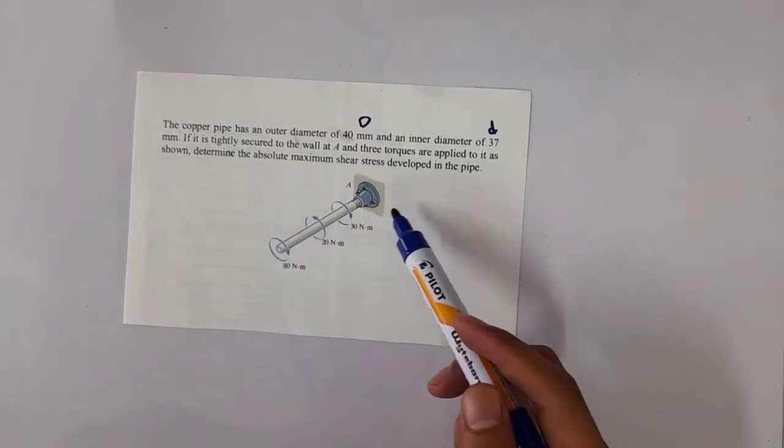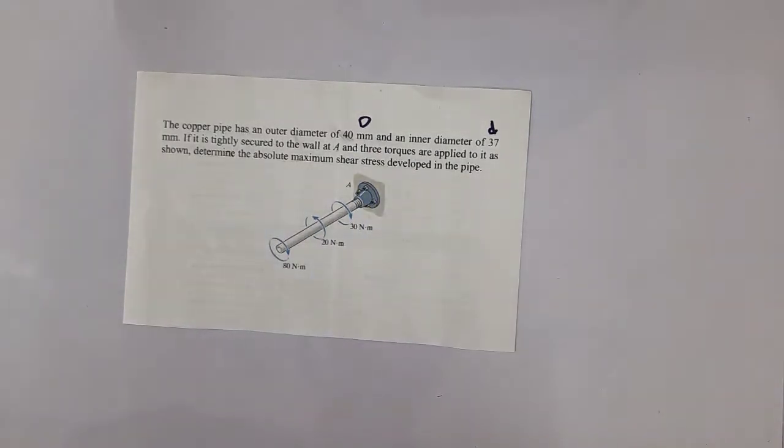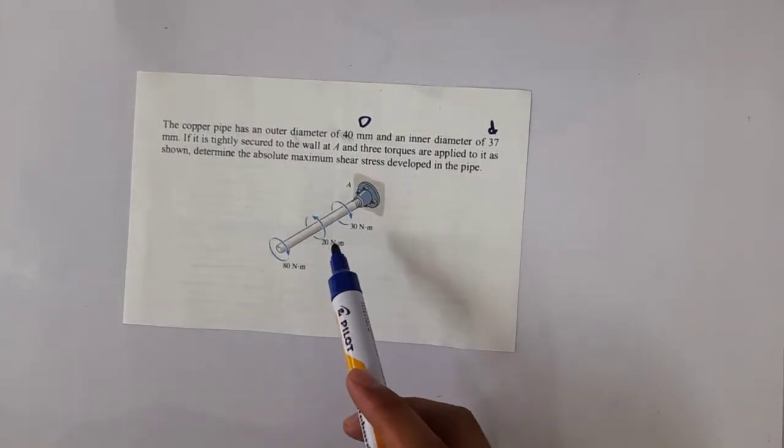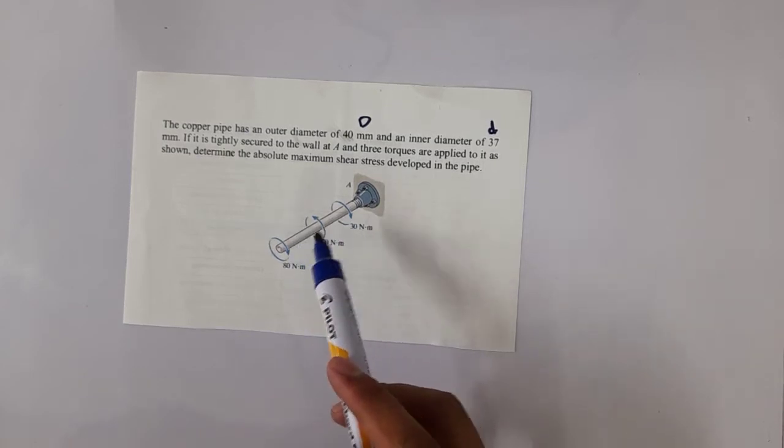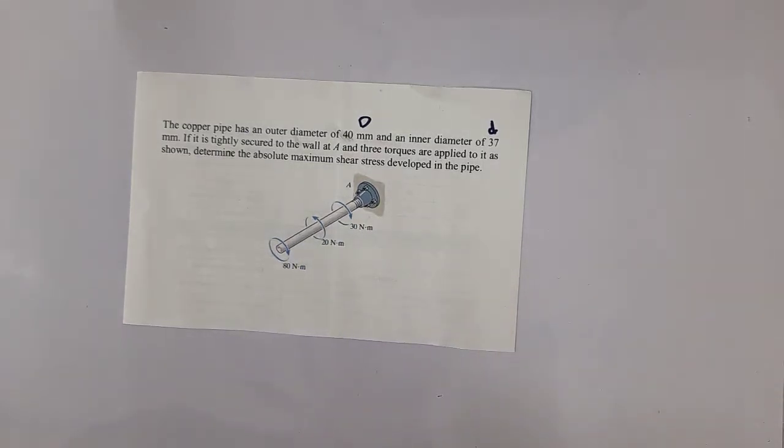It's tightly secured to the wall at A, so this is the wall. We have three given torques which are applied as shown, and we're going to determine the absolute maximum shear stress developed in the pipe.